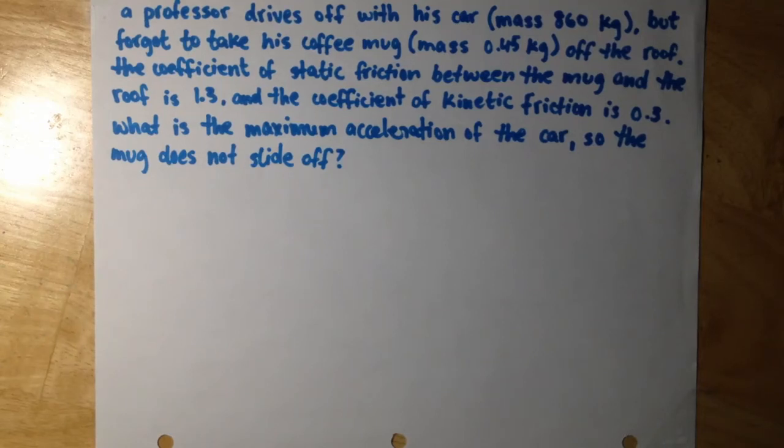A professor drives off with his car, mass 860 kilograms, but forgot to take his coffee mug, mass 0.45 kilograms, off the roof. The coefficient of static friction between the mug and the roof is 1.3, and the coefficient of kinetic friction is 0.3. What is the maximum acceleration of the car so the mug does not slide off?